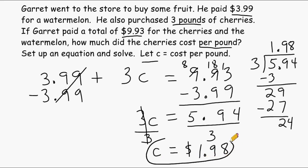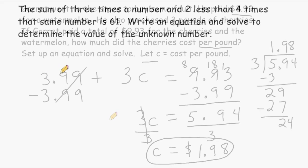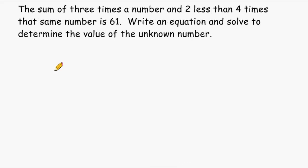And that is one example of how you can set up and solve a linear word problem. Let's try another example. This problem says that the sum of three times a number and two less than four times that same number is sixty-one. Write an equation and solve to determine the value of the unknown number. Right away it says we have to find the sum of something, and the things we are going to add are three times a number and two less than four times that same number, and that sum is going to equal sixty-one.